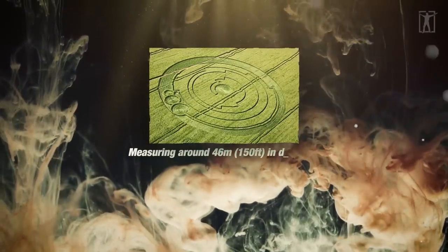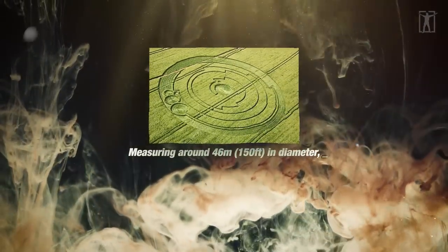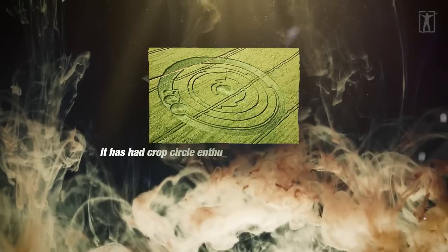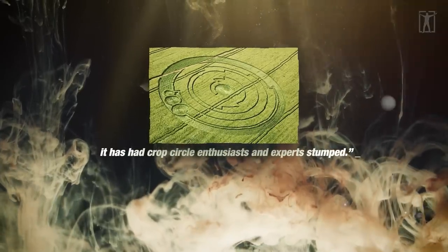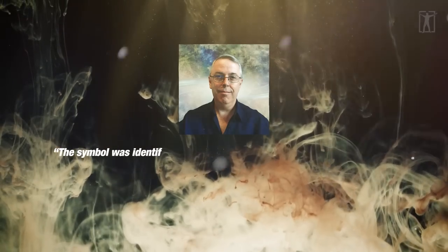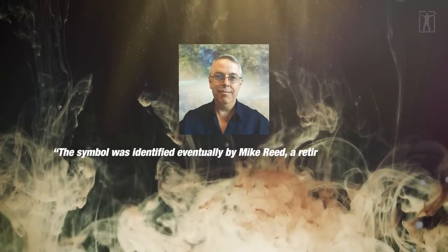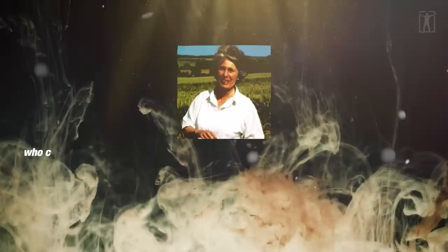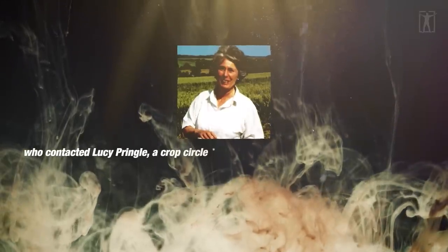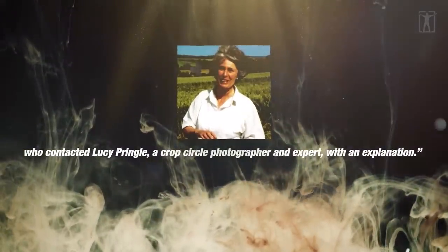Measuring around 46 meters or 150 feet in diameter, it has had crop circle enthusiasts and experts stumped. The symbol was identified eventually by Mike Reed, a retired astrophysicist who contacted Lucy Pringle, a crop circle photographer and expert, with an explanation.